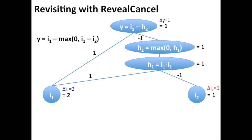How does the reveal-cancel rule address the problem of the min operation from before? As before, we have delta i1 and delta i2, but now instead of just having one delta h1, we have a positive delta h1 consisting of the plus 2 contribution from i1 and a negative delta h1 consisting of the negative 1 contribution from i2. To compute delta h2 plus and delta h2 minus, we use the reveal-cancel rule.